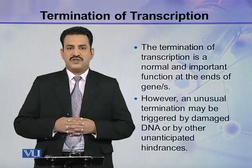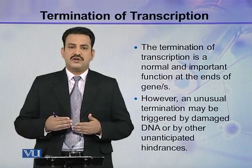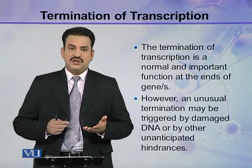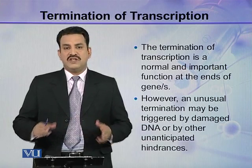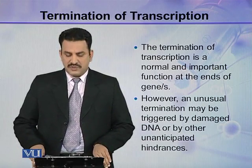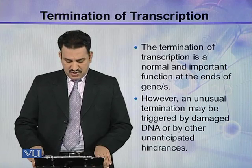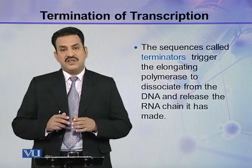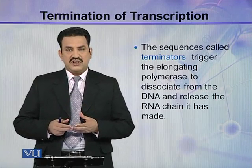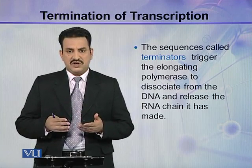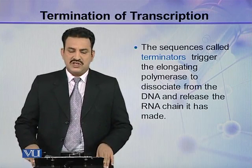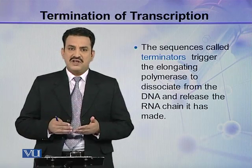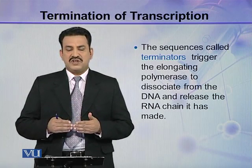The termination of transcription is a normal and important function, and it normally takes place at the end of a gene or genes if the transcription involves more than one gene. However, an unusual termination may be triggered by abnormal or damaged DNA or by other unanticipated hindrances. If there is any problem in the DNA — if DNA is damaged or something unusual happens — the transcription normally terminates there. This is an unusual process, but normally transcription has to be terminated at some point.